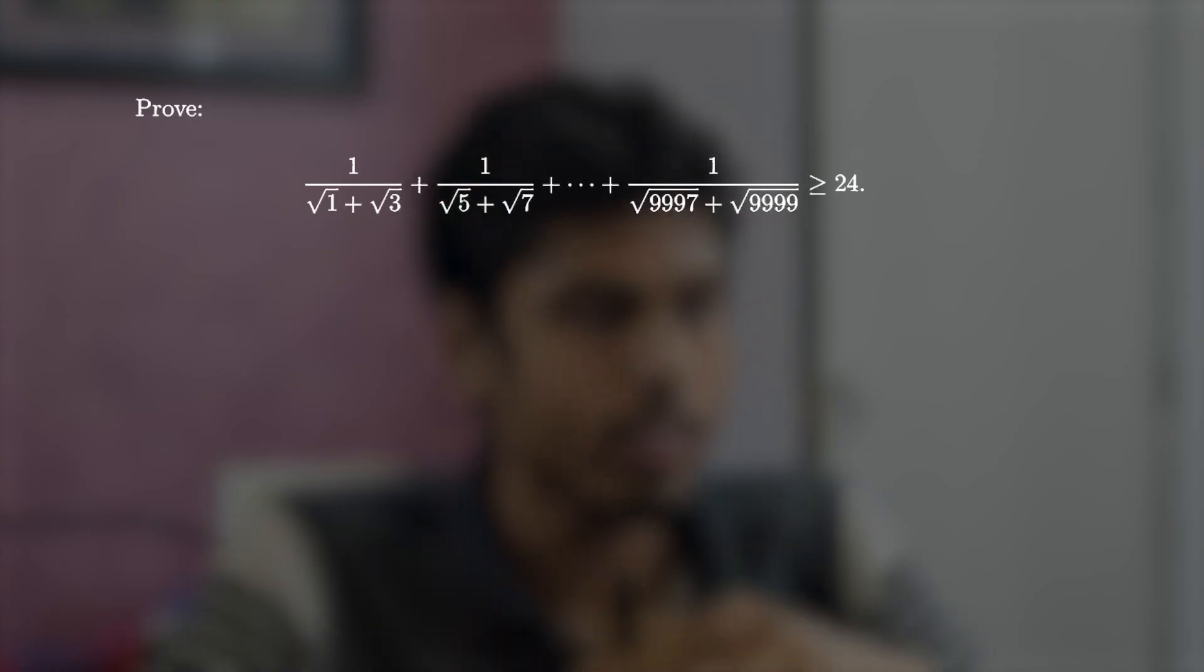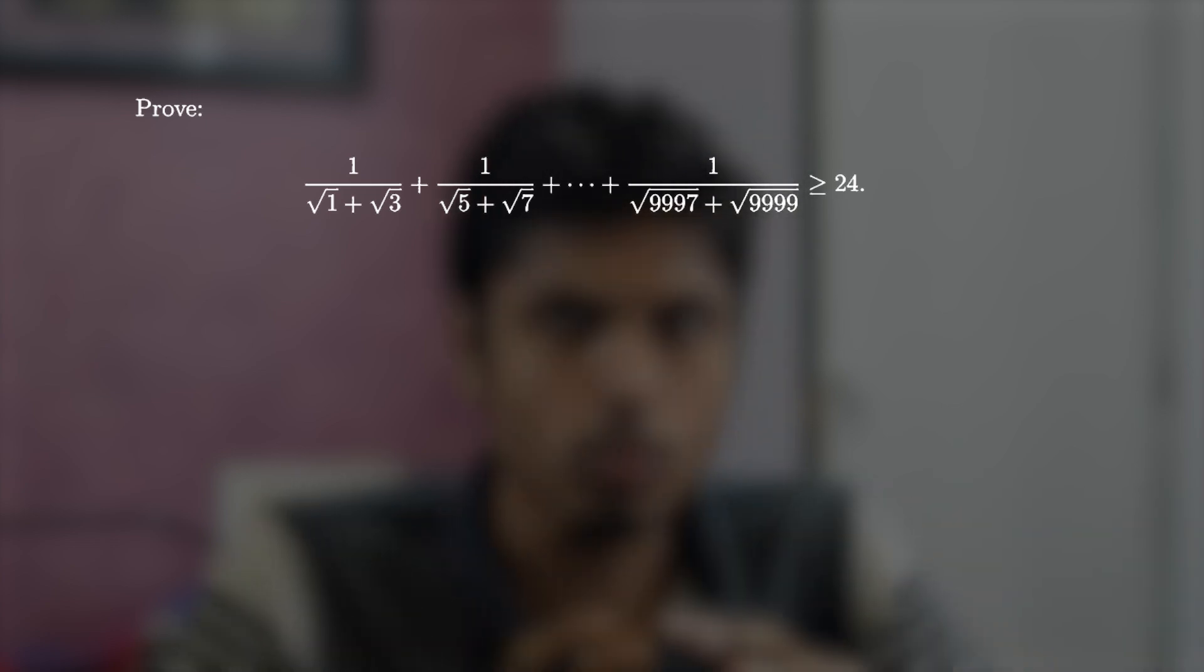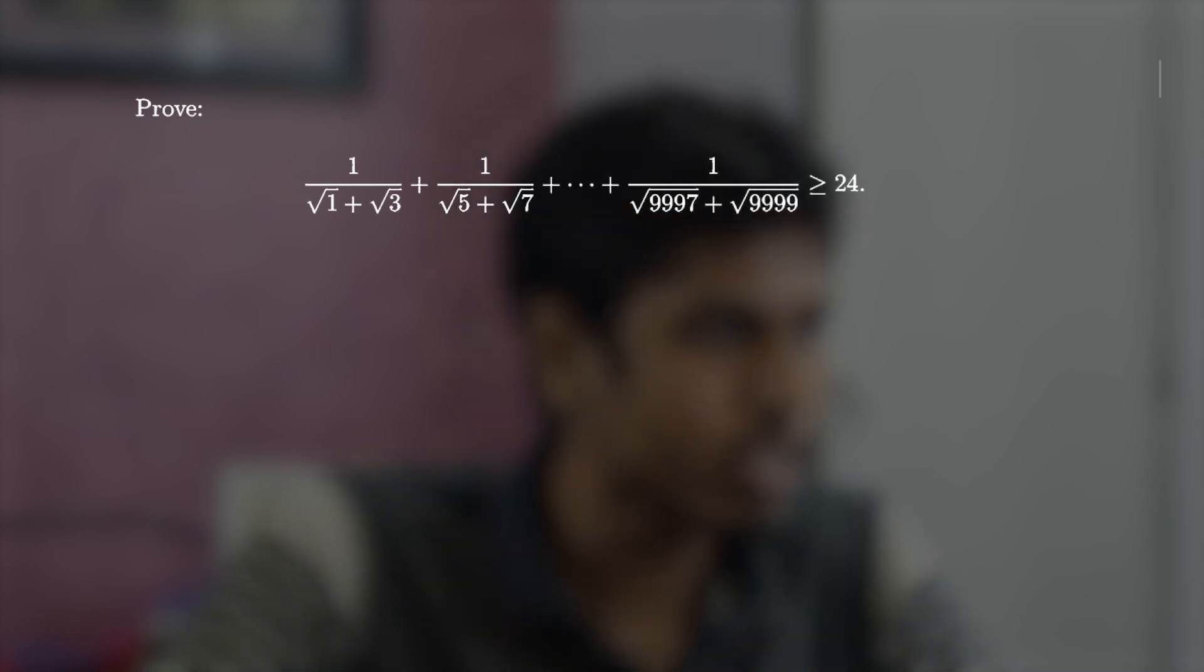Here is the problem that we are going to solve today. This involves proving the inequality given. Let's tackle this problem via telescoping series. Consider each term. For example, the first term is 1 by under root of 1 plus under root of 3, whereas the second term is 1 by under root of 5 plus under root 7.